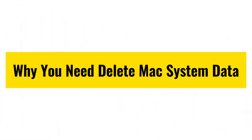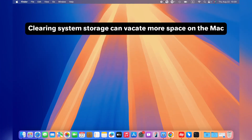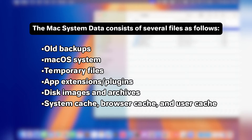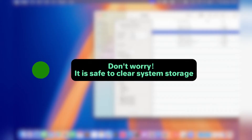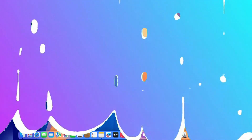Why do you need to delete Mac system data? Clearing system storage can vacate more space on the Mac. The Mac system data consists of several files: old backups, Mac OS system, temporary files, app extensions, disk images and archives including DMG and ZIP, and cache files like system cache, browser cache, and user cache. It is safe to erase system data to decrease the impact on your Mac's storage, as some of these files are superfluous.